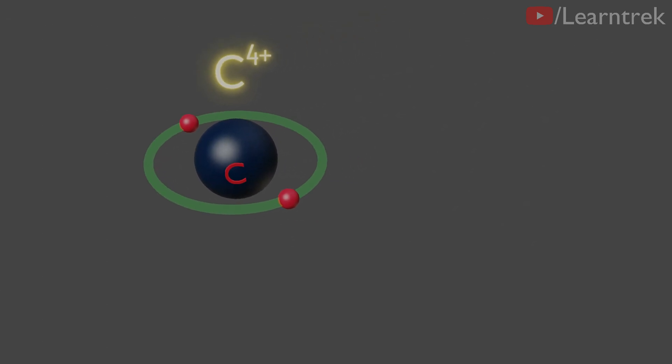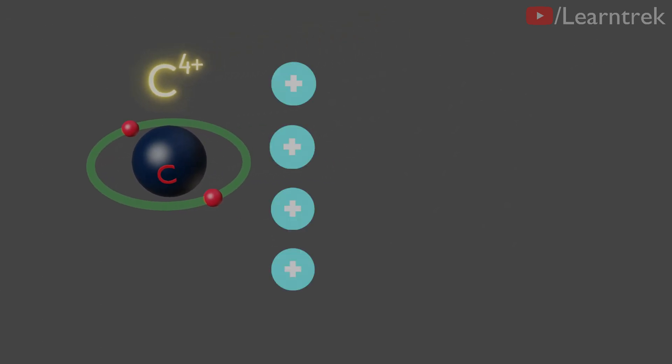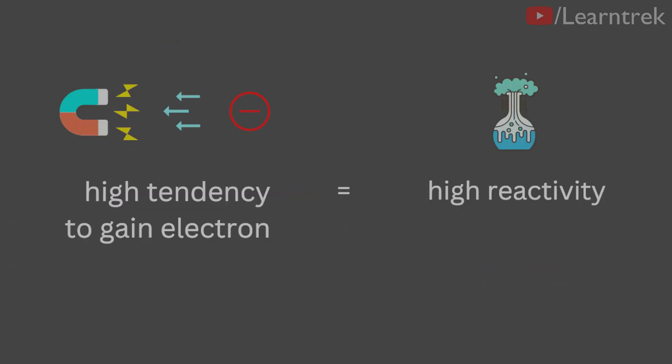This C4-positive cation with four positive charges will have a very high tendency to gain electrons. But we have studied earlier that elements which have high tendency to gain electrons are highly reactive.